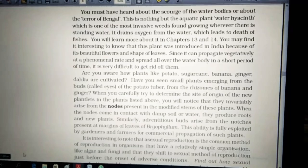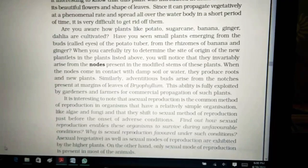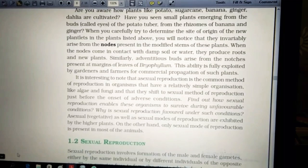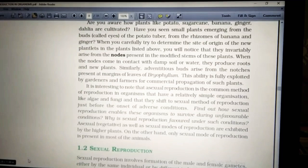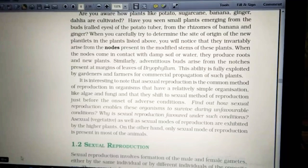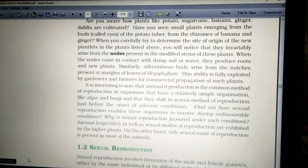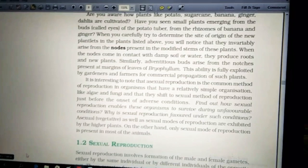Are you aware of how the plants like potato, sugarcane, banana, ginger, dahlia are cultivated? Potato through the eyes I have showed you. Sugarcane through the roots. Banana also grown on the trees and ginger and dahlia they are through the rhizomes. Have you seen small plants emerging from the buds called as the eyes of the potato tuber from the rhizomes of banana and ginger? Where you carefully try to determine the site of origin of the new plantlet in the plants listed above, you will notice that there are invariably arise from the nodes present in the modified stem of these plants. Modified stem here means that part where the vegetative propagules or vegetative reproduction is taking place and that plant part is known as nodes. When the nodes come in contact with the damp soil or water, they produce roots and new plants because they require water, certain nutrients and the soil to grow in. So, here the nodes when they come in contact with the damp soil that contains nutrients, water, soil, everything that the plant needs, they start to grow.